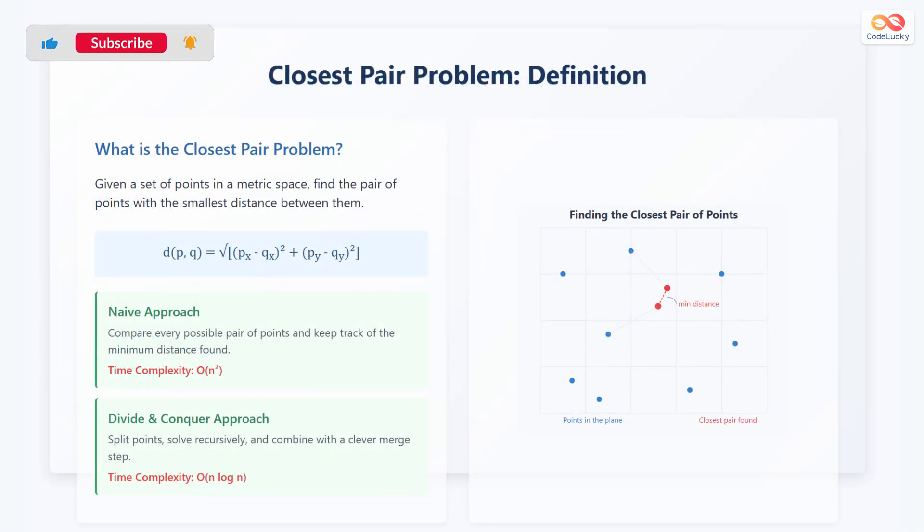The closest pair problem involves finding the pair of points with the smallest distance between them, given a set of points in a metric space. Given the points P and Q, the distance D between them is equal to the square root of (P_X - Q_X)² plus (P_Y - Q_Y)².